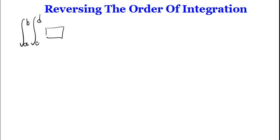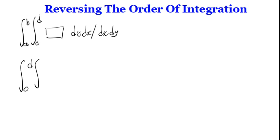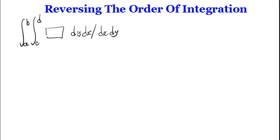Say you have dy dx or dx dy. When reversing the order of integration, you have to focus on these limits — you cannot just go ahead and swap and say this is now going to be C to D, then A to B, and if it was dy dx it's now dx dy. It's not really as straightforward as that, because those limits are sometimes functions.